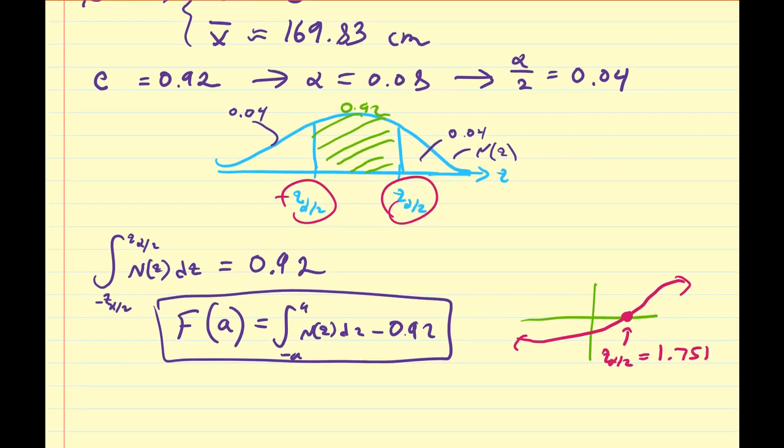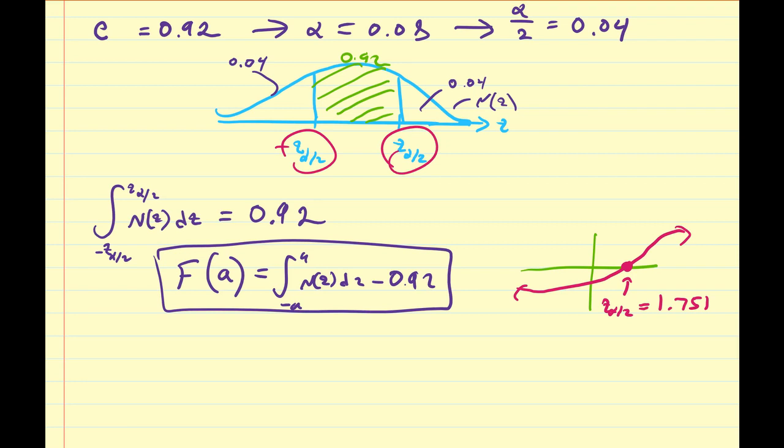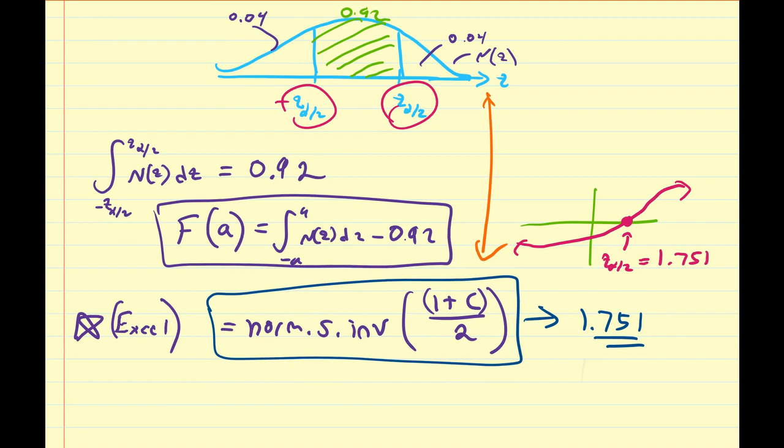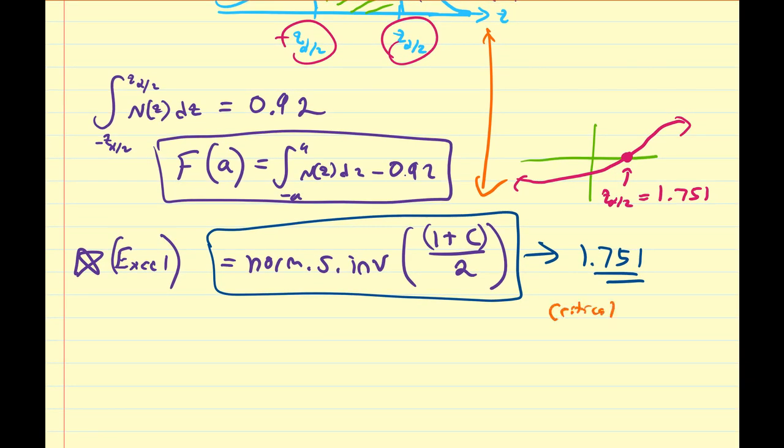Now, if you do not want to do this in Desmos, and you want to do this strictly in Excel, you can do that too. For this particular case, there is an Excel representation that you can use. In Excel, that's going to be equal to norm.s.inv, parentheses, 1 plus C all divided by 2. And make sure to put that in parentheses here. So this is going to give you the same value, 1.751. If you want to do it in Excel, it's up to you. But note, this formula only corresponds to this picture. If this picture changes, this formula is going to slightly change a bit. But this is what we call the critical value.